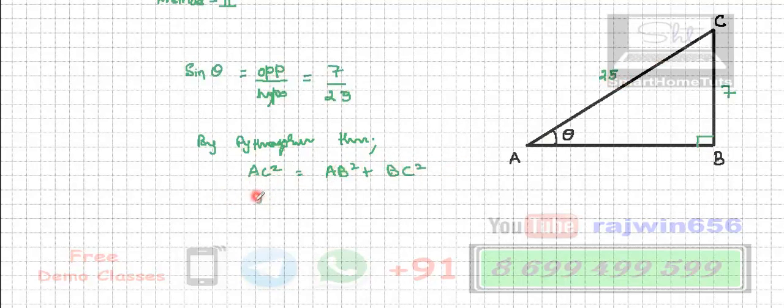So this is going to become 625. This will become 25 square is equal to AB square. We have to find AB plus BC square will be 7 square.